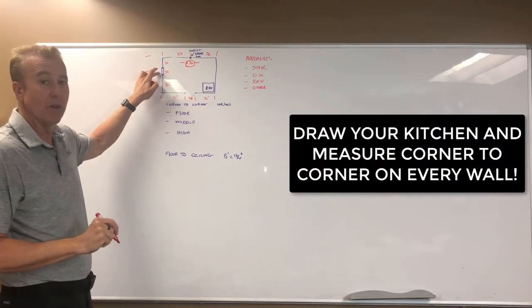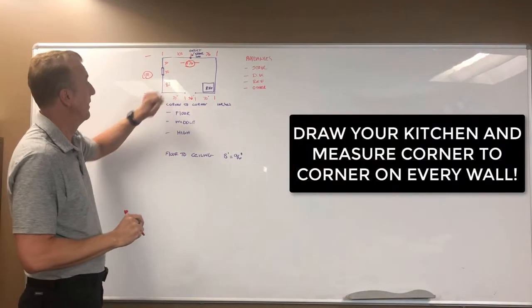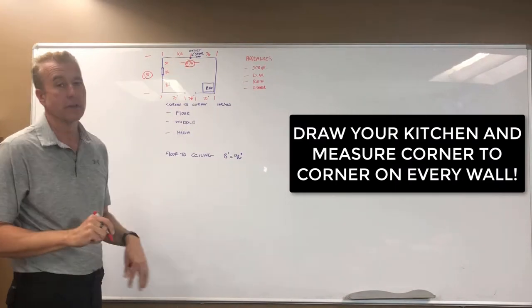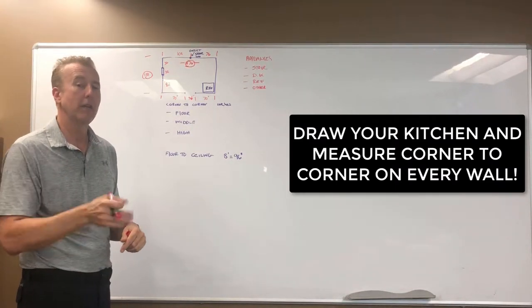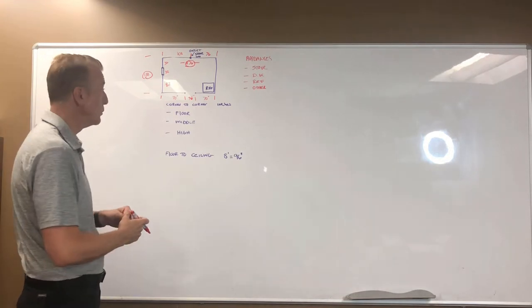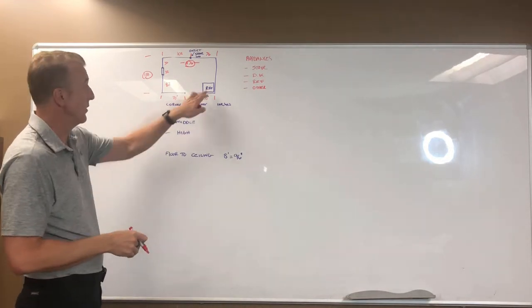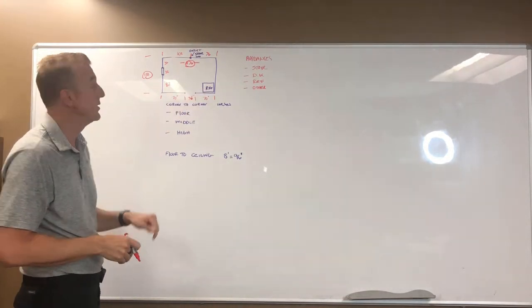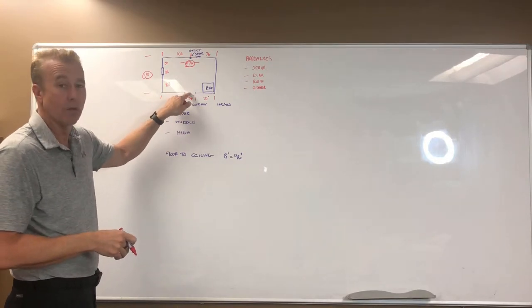In this particular kitchen, I've drawn a window on this wall and I've drawn the location of the current stove electrical outlet or the gas that's coming out of the floor or the wall. We need to know that information. I've also labeled where the refrigerator currently is and I have a door on this wall down at the bottom.